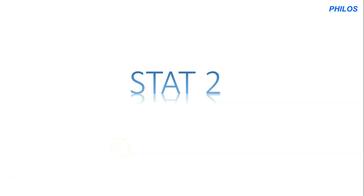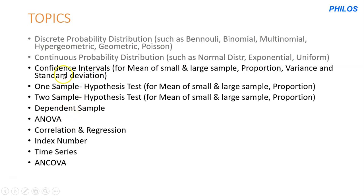Hello everyone, welcome back to Philus Academy. In today's video we're going to take the introductory part of Stats 2. Stats 2 actually starts from confidence intervals if you were able to cover discrete probability distributions and continuous probability distribution in Stats 1. But if not, you likely start Stats 2 from discrete probability distribution. The most important topics are binomial, Poisson, and maybe multinomial distribution, and for continuous probability distribution the most important one is the normal distribution.